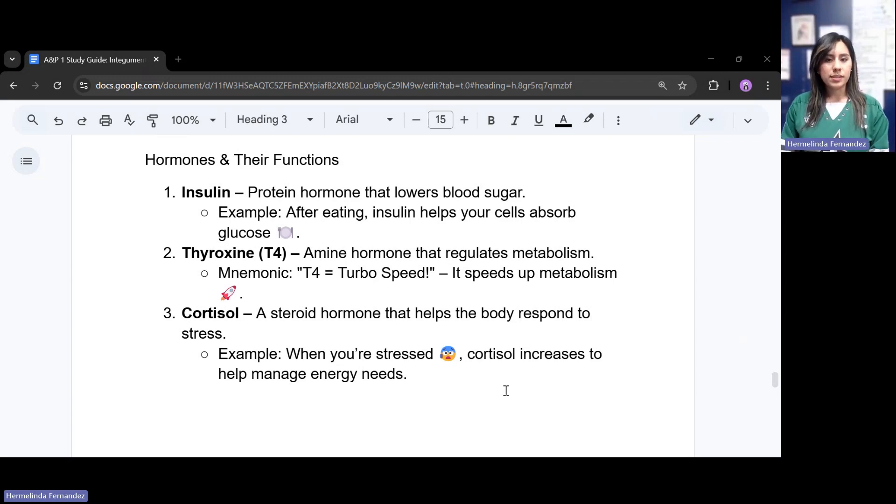T4 or thyroxine. This hormone regulates our metabolism. A mnemonic for this would be T4 is turbo speed. It speeds up our metabolism. We have cortisol. Cortisol is a steroid hormone that helps the body respond to stress. When we're really stressed out, our cortisol tends to increase to help us manage our energy needs.